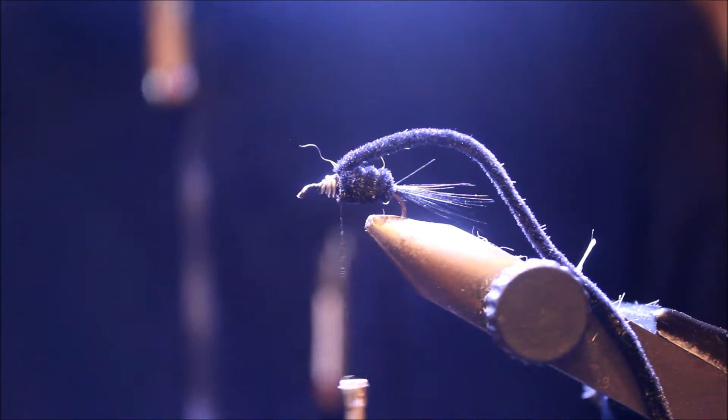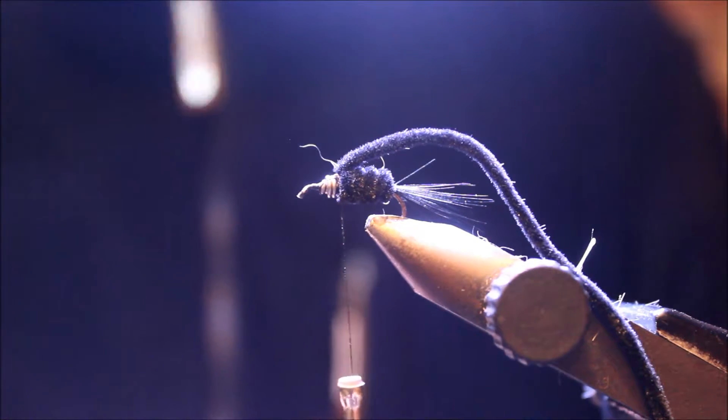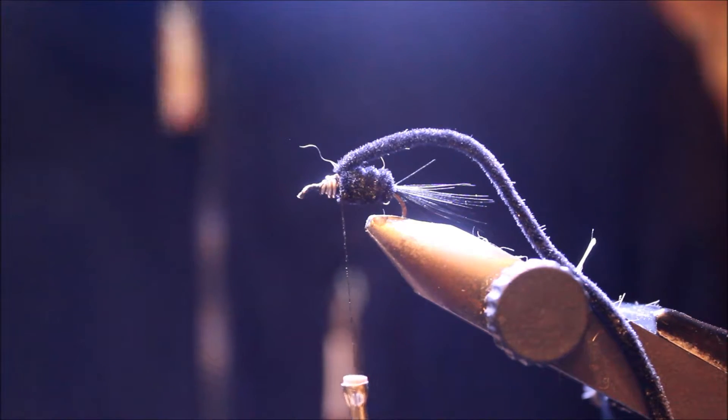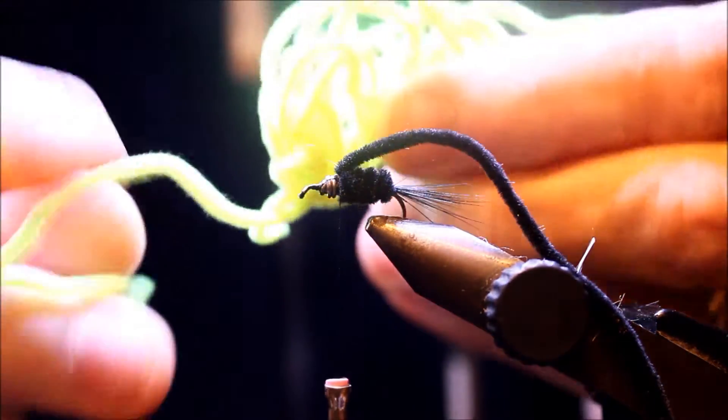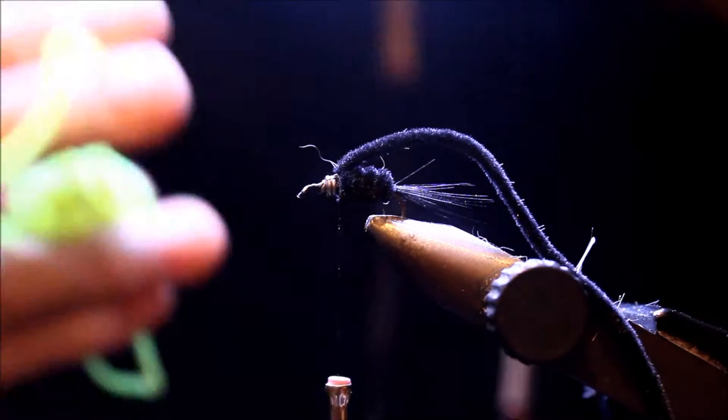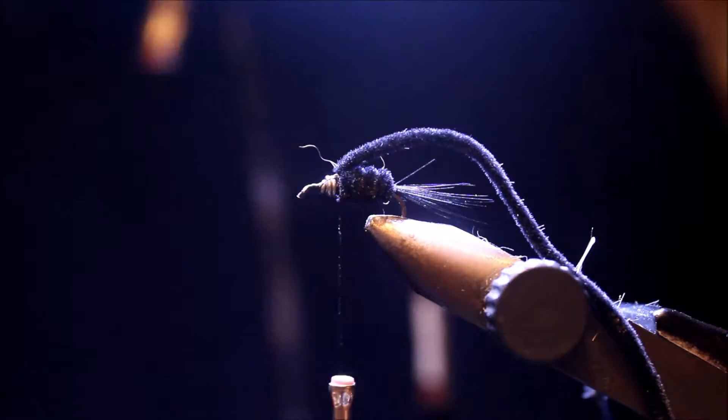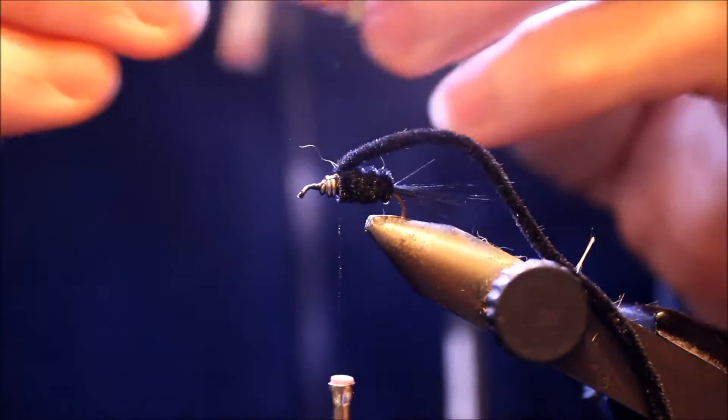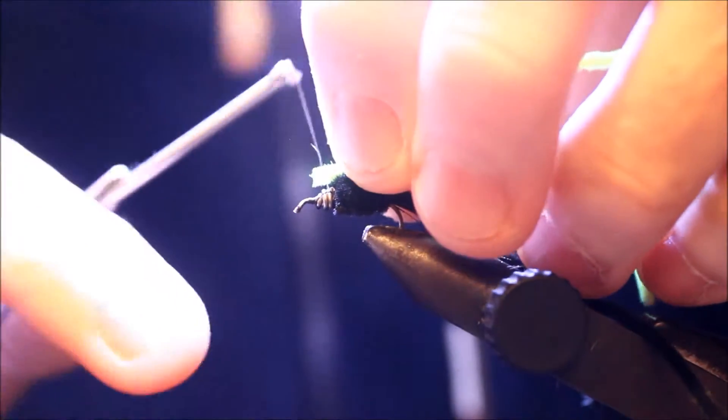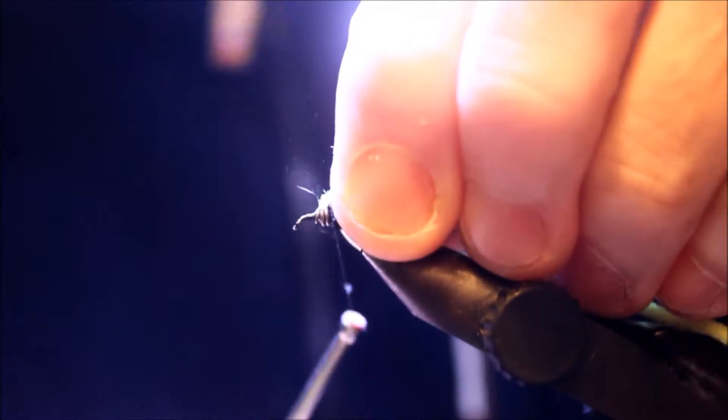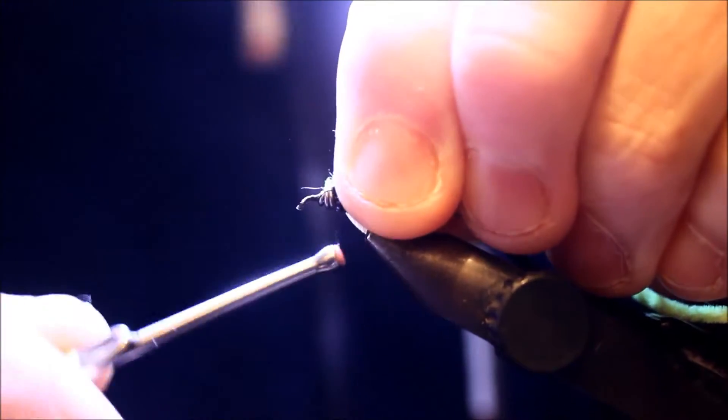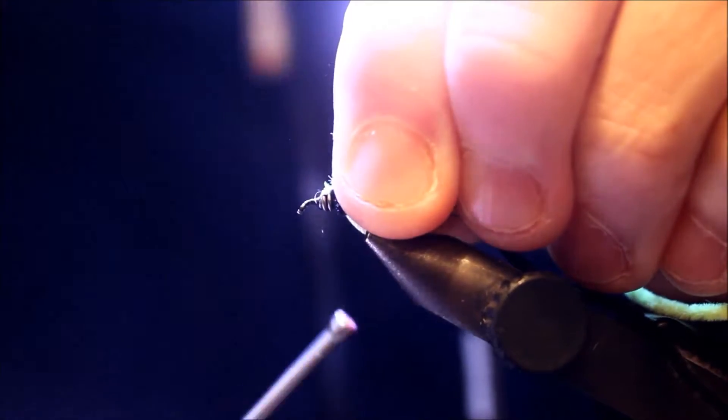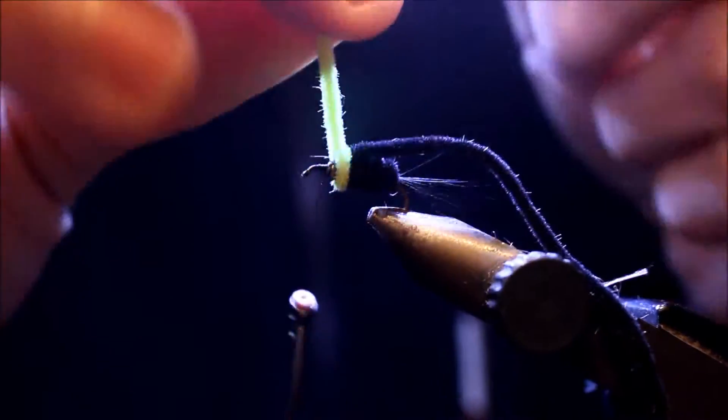Ensuite je vais prendre la même chenille mais cette fois-ci en chartreuse. Ça donne ceci: c'est une espèce de jaune vert, c'est surtout flashy. Je vais venir la poser dessus, la partie où j'ai plombé un petit peu plus. Là je fais deux tours.